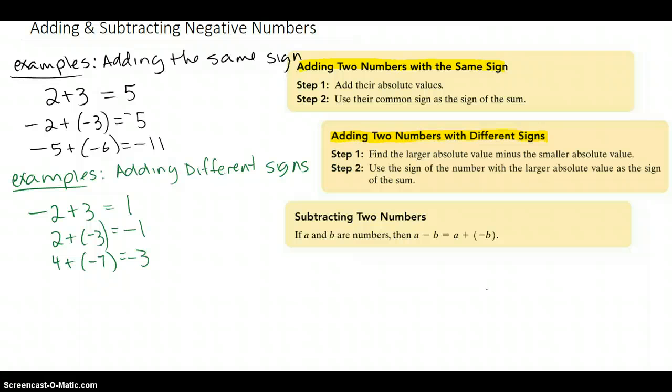Finally, how do we subtract two negative numbers? What we're going to do is add the opposite. I'm going to write that down. It turns out that subtracting a number is the same as adding the opposite.